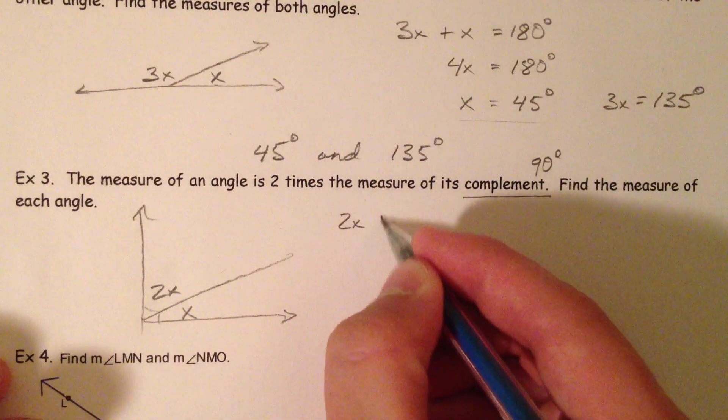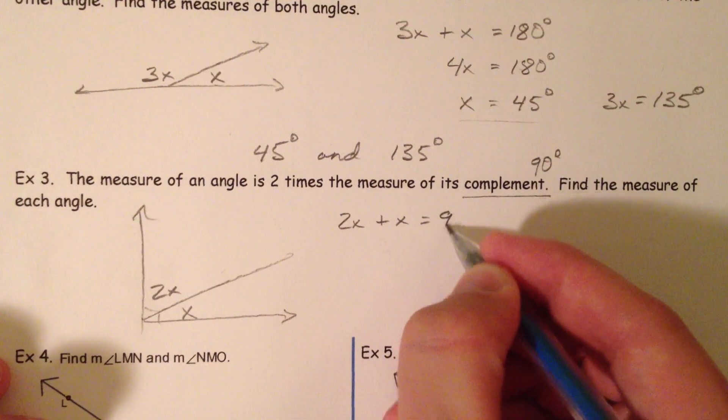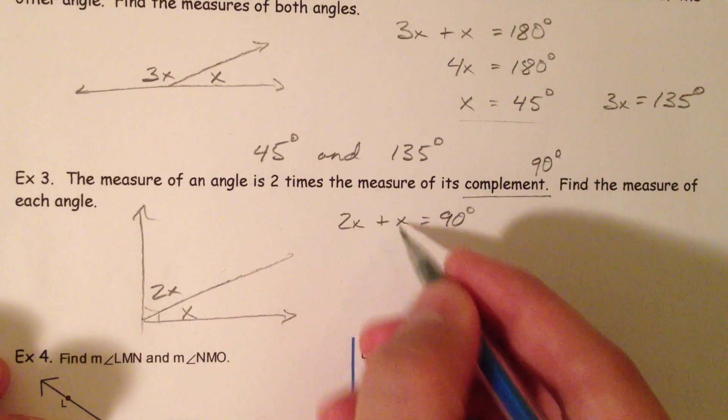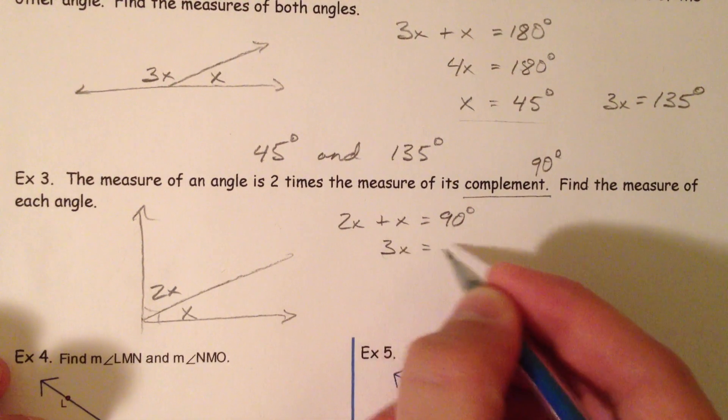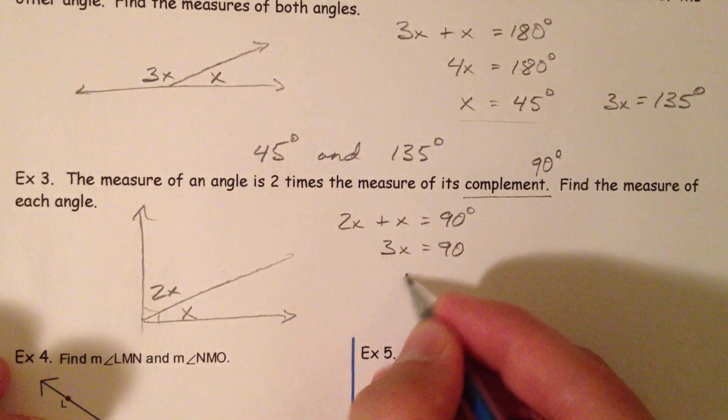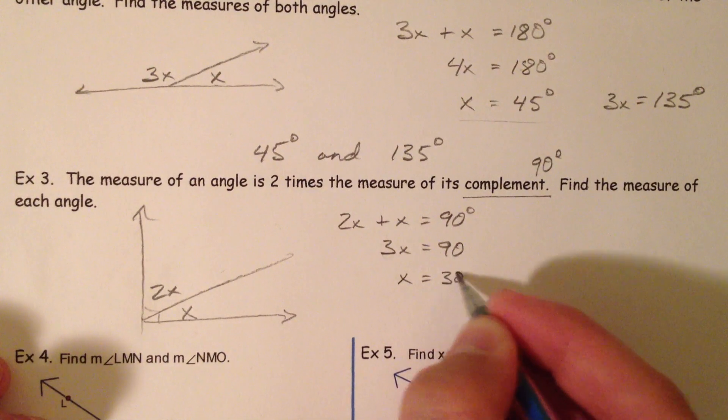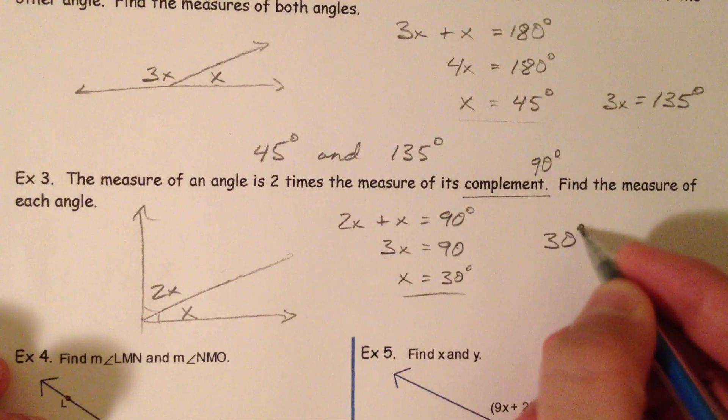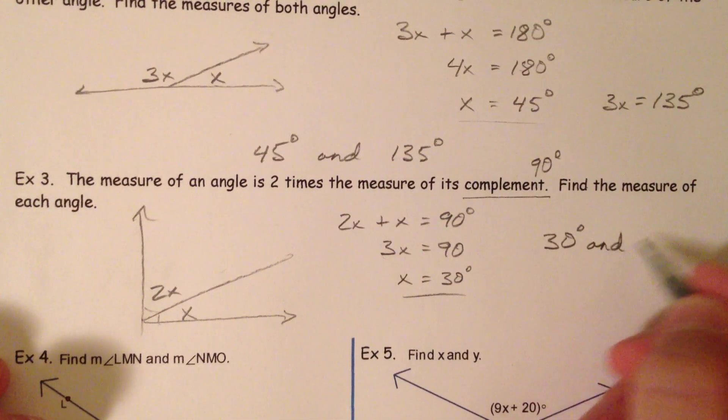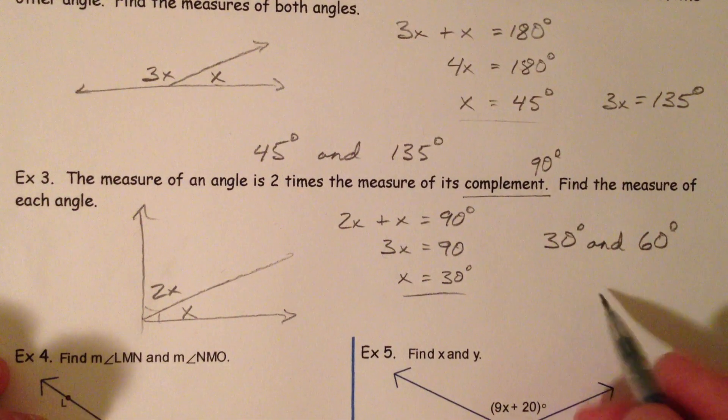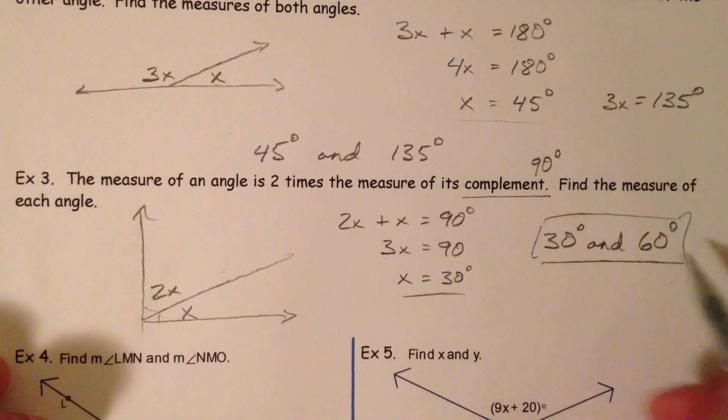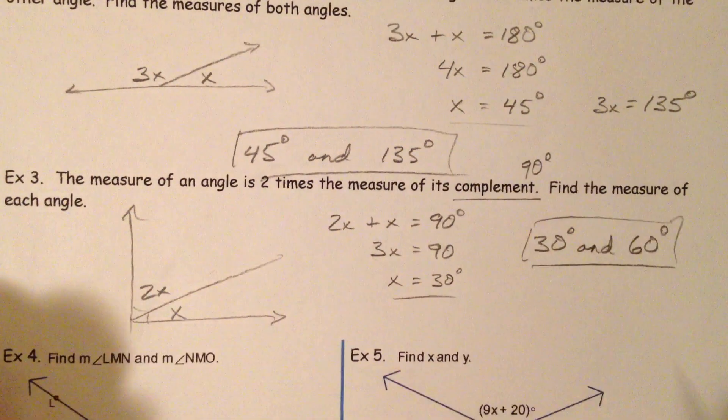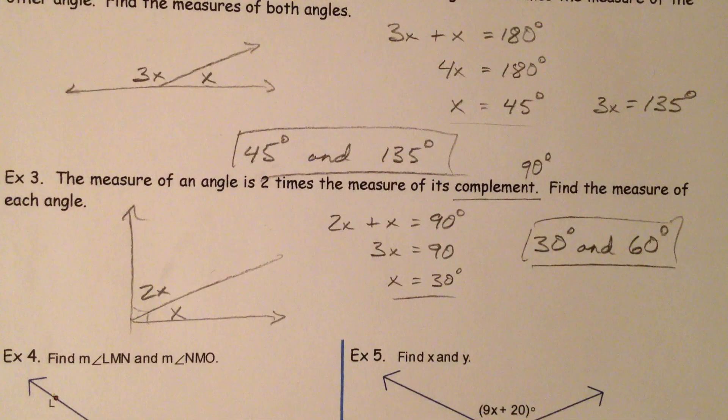So 2X plus X better equal 90. And so 2X and X make 3X. And so X is 30 once you divide. So 30 degrees and then the one that's twice that is 60. And notice that 30 and 60 add up to 90. Alright, let's keep going.